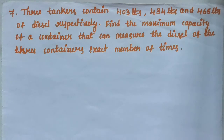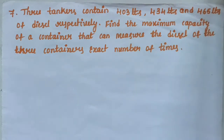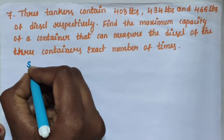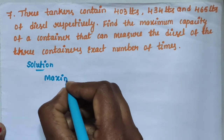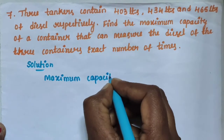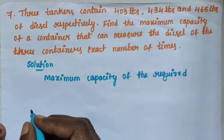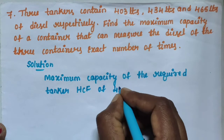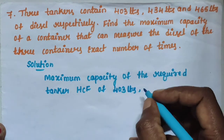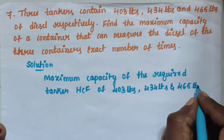Find the maximum capacity of the container. The quantities are 403 liters, 434 liters and 465 liters. Solution: The maximum capacity of the required container is the HCF of 403 liters, 434 liters and 465 liters.